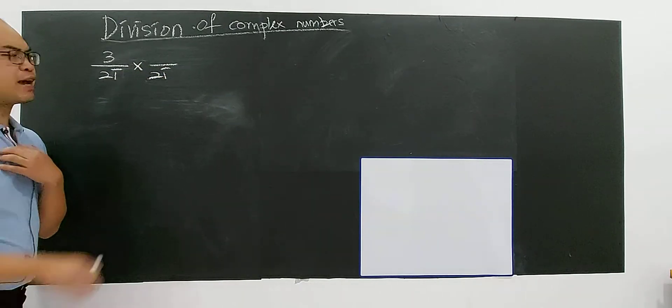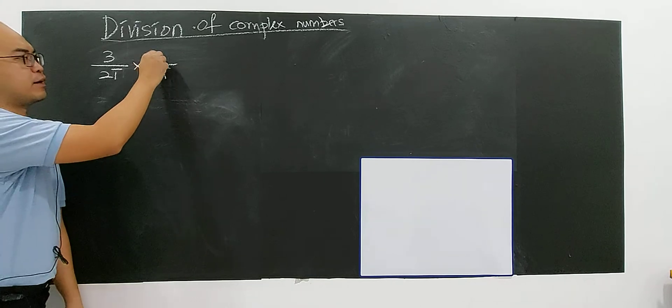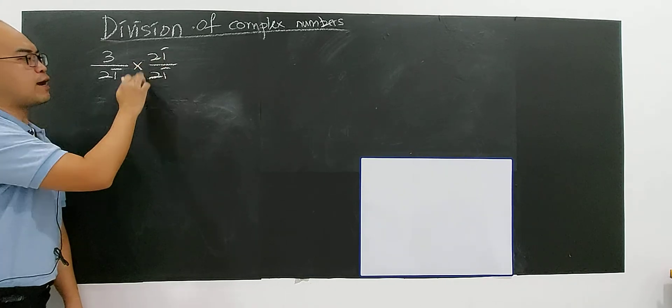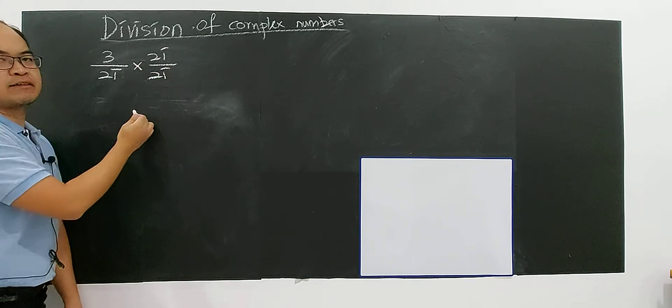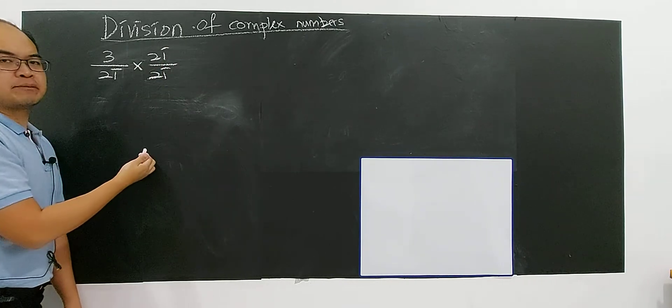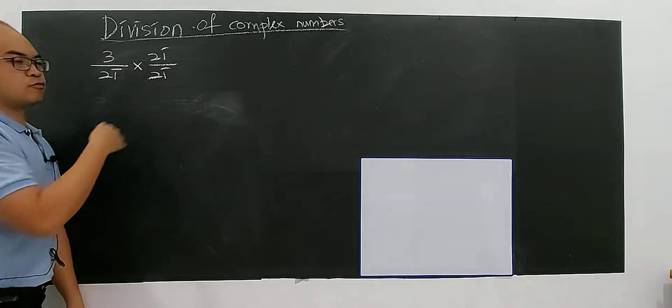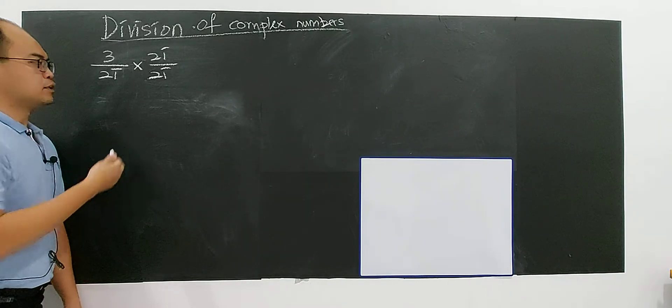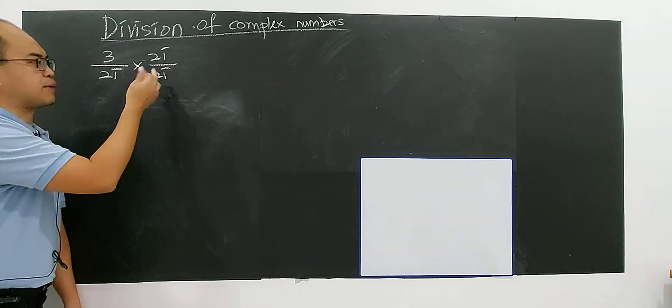You have to remember, you can put 4i, 5i - it will still be the same, okay? So for your own comfort, maybe you can multiply by 2i, okay?